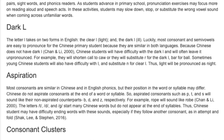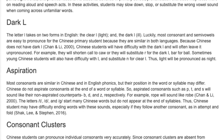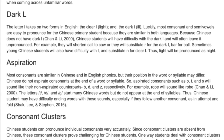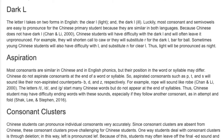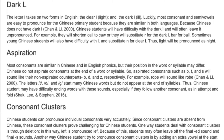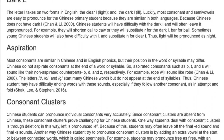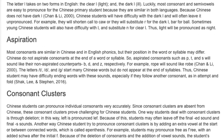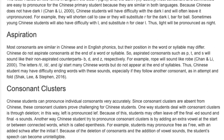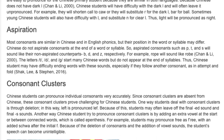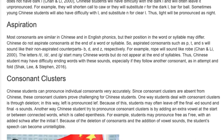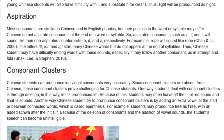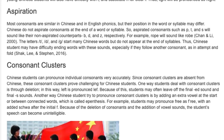Aspiration. Most consonants are similar in Chinese and English phonics, but their position in the word or syllable may differ. Chinese speakers do not aspirate consonants at the end of a word or syllable, so aspirated consonants such as P, T, and S will sound like their non-aspirated counterparts B, D, and C respectively. For example, 'rope' will sound like 'robe'. The letters T, D, and G start many Chinese words but do not appear at the end of syllables, so Chinese students may have difficulty ending words with these sounds, especially if they follow another consonant — an attempt to unfold. Consonant clusters.